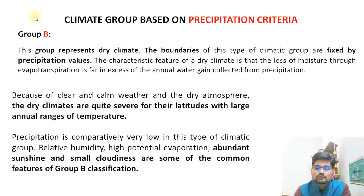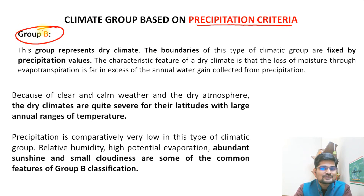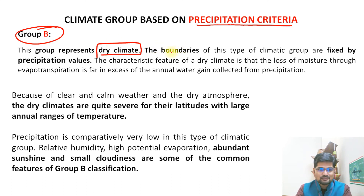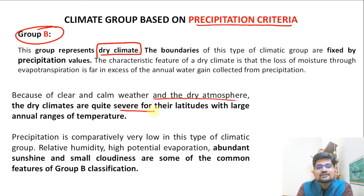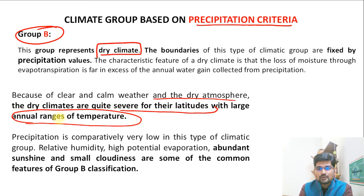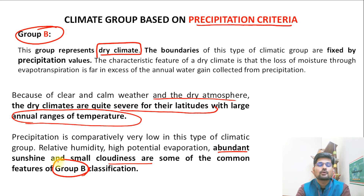The seventh group is the only one based on precipitation criteria — Group B, which represents the dry climatic group where precipitation values are fixed. Dryness, meaning the absence of precipitation, is the defining criterion. Because of clear and calm weather and a dry atmosphere, dry climates are quite severe for their latitudes with large annual ranges of temperature, abundance of sunshine, and small cloudiness — these are the common features of Group B.